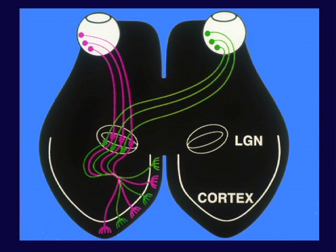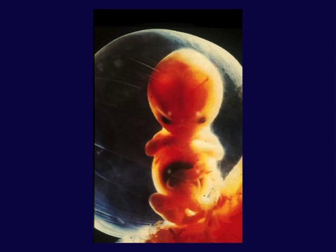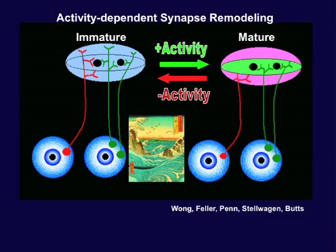A nice example I want to discuss is the connections between retina and LGN and the formation of eye-specific layers. This story starts much earlier in development — the eye-specific layers develop in utero. In humans, they're formed by the end of the first trimester. Yet what I'm going to tell you is that these patterns of connections actually require neural activity and signaling between the eye and the brain — but it cannot be vision, because it's too early in development.